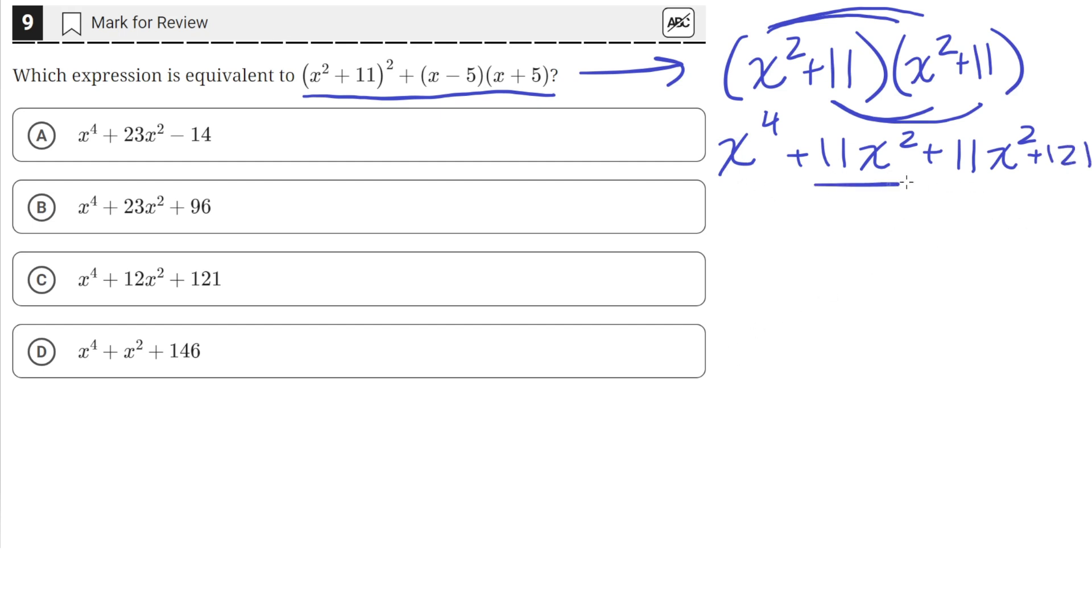And then we can just add these two like terms. So x to the fourth plus 22x squared plus 121.